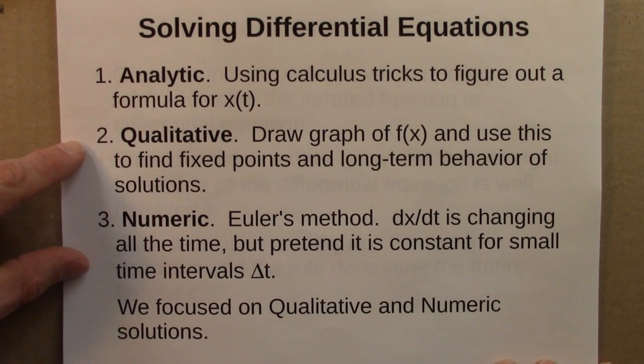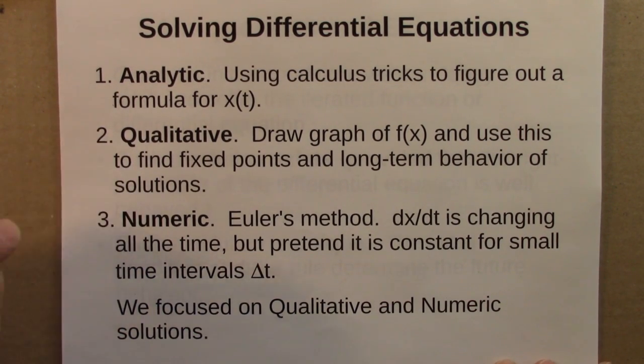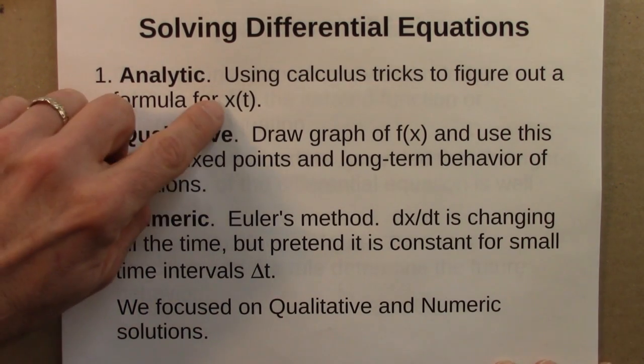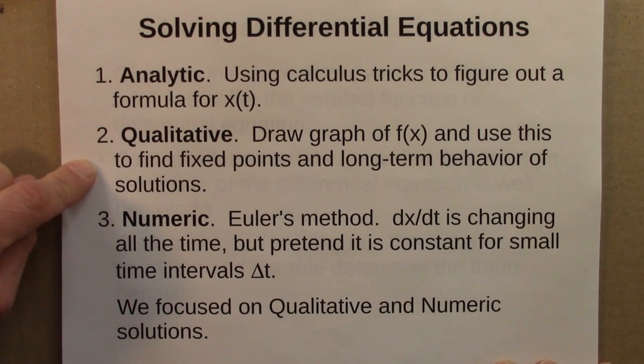Analytic results are important and good things to know in many settings, but we focused on two other approaches. We looked at qualitative solution methods, where we draw a graph of f(x) and use this to find fixed points and long-term behavior of solutions. This won't give us the exact curve X of T, but it will tell us how many fixed points there are, where they are, what their stability is, and the long-term behavior of all initial conditions. It gives us qualitative and global information.